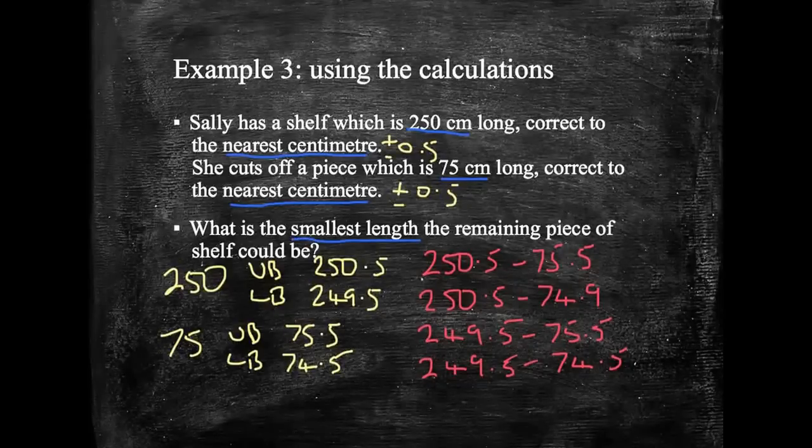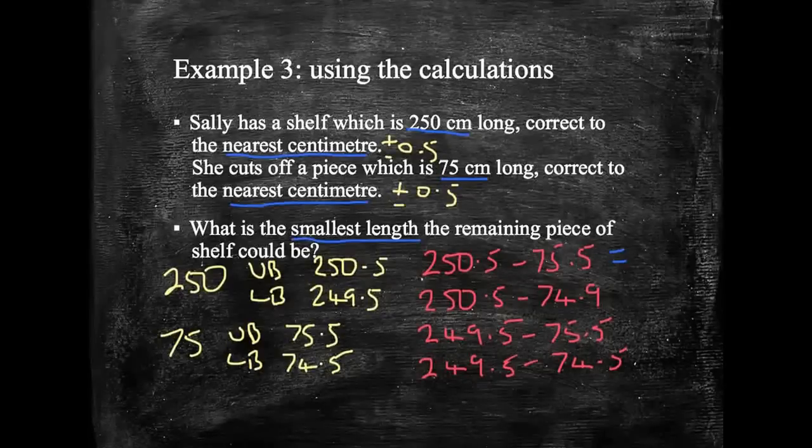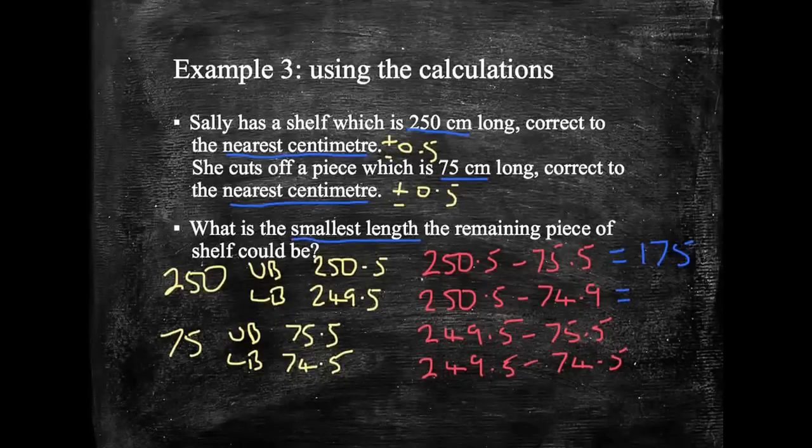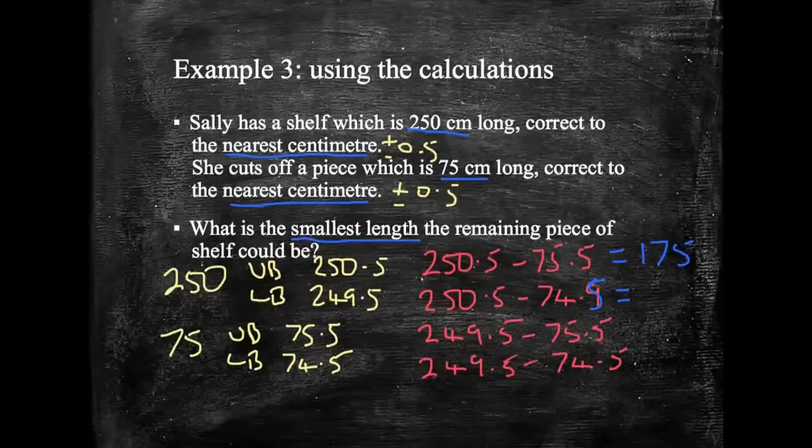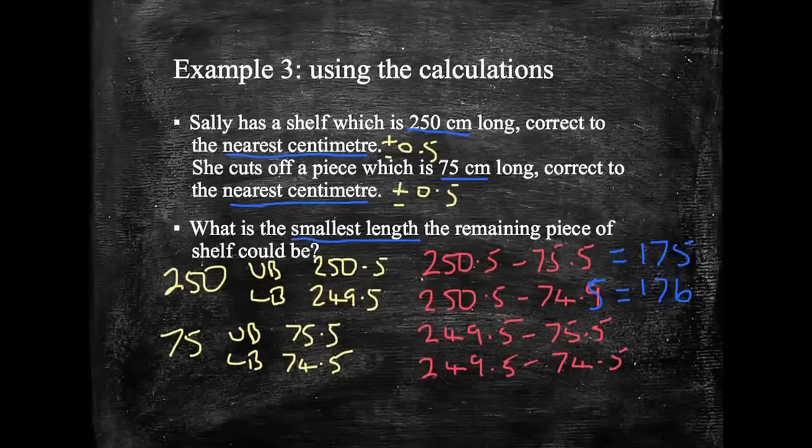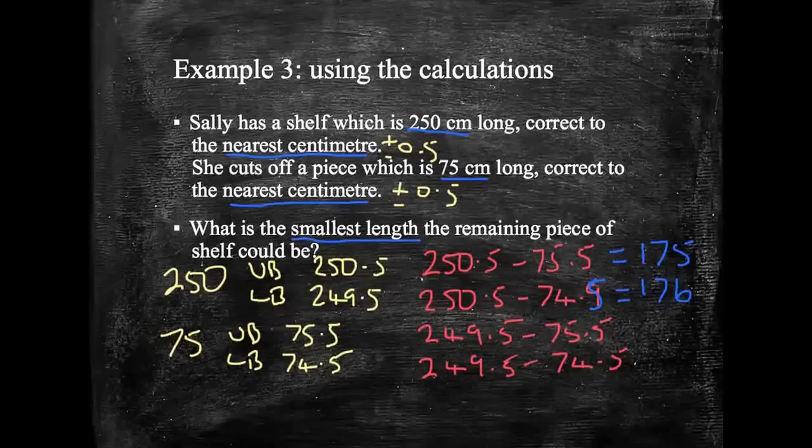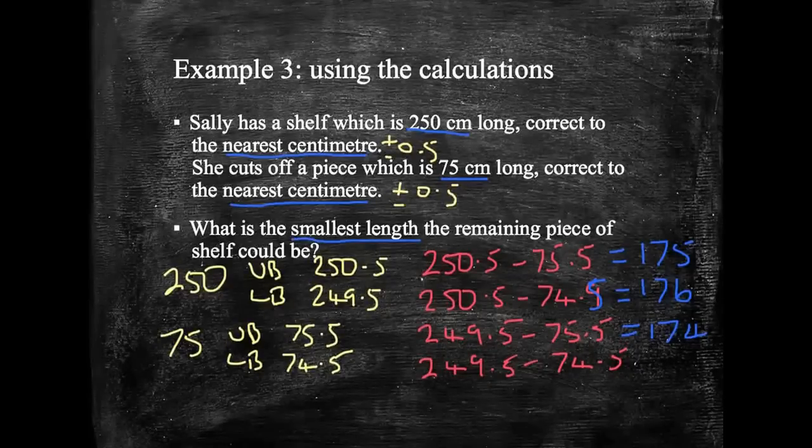Okay, well done if you spotted that in the video. Okay, let's do some of these sums then. So let's get our answers. Okay, and so on our calculator here we've got 175 centimeters for this one. Next we've got 250.5 minus 74.5. I've done it again, I've written 0.9 there. There we go. So that's 176. And next we've got 249.5 minus 75.5 which gives me 174. And finally I've got 249.5 minus 74.5 which gives me 175.